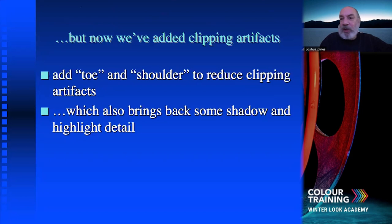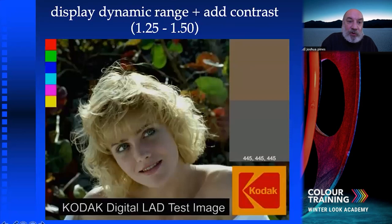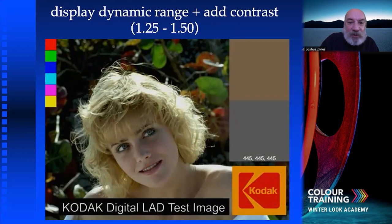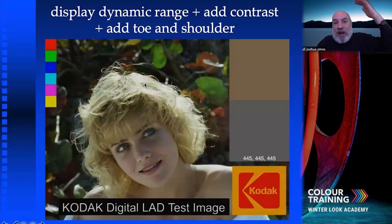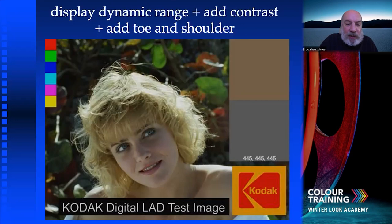So there's this thing we all know and love — we're going to add a toe and a shoulder to bring back some of the highlight and shadow detail. Here's the look of it: it's an S-curve, an S-shaped curve. This is where we were — we clipped all the shadow detail. With the S-curve we bring a little of it back, and the highlight detail in the hair isn't clipped as much either. The main point is that this S-curve tone mapping is your friend.